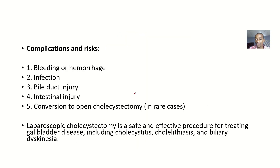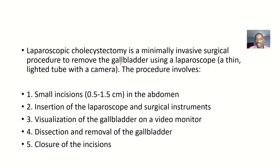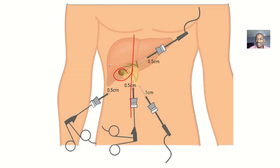The laparoscopic cholecystectomy is a minimally invasive surgical procedure to remove the gallbladder using a laparoscope. A laparoscope is a thin tube that has a camera at the head — you can see the light at the head. From this light and camera, you'll be seeing how you are operating inside the human being.